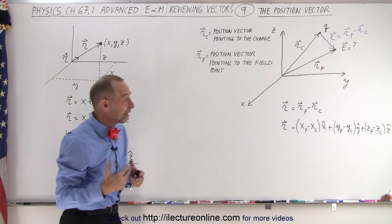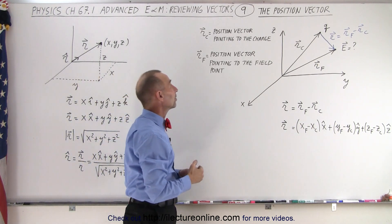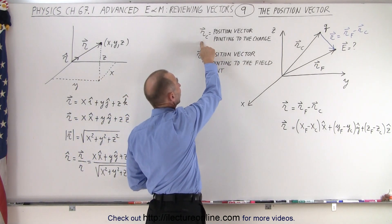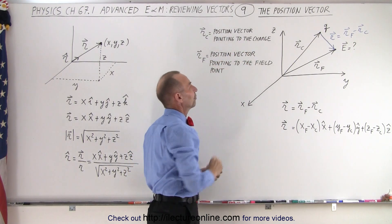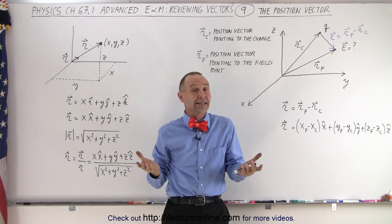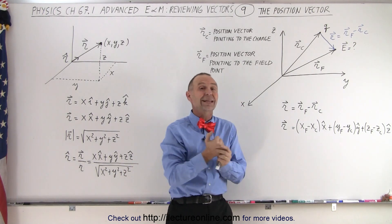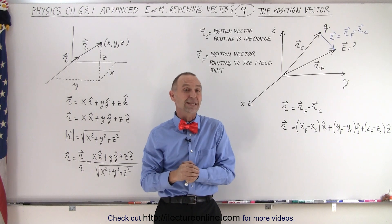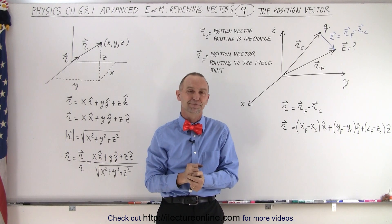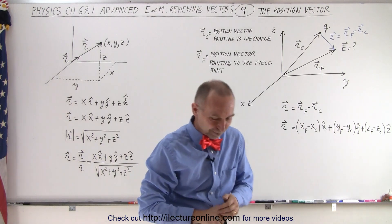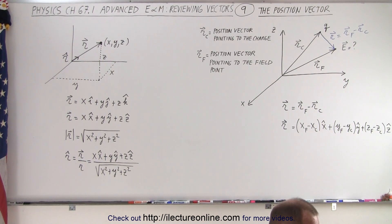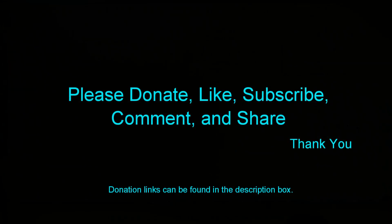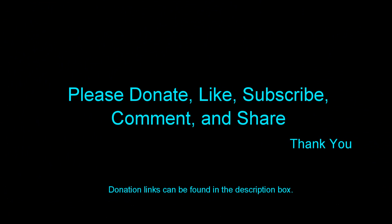Understanding that is going to be very helpful in the future when dealing with these kinds of things. Remember the definitions: r sub c is the position vector pointing to the charge, and r sub f is the position vector pointing to the field point. That is how we get a handle on this notation when dealing with the actual fields. And that is how it's done.